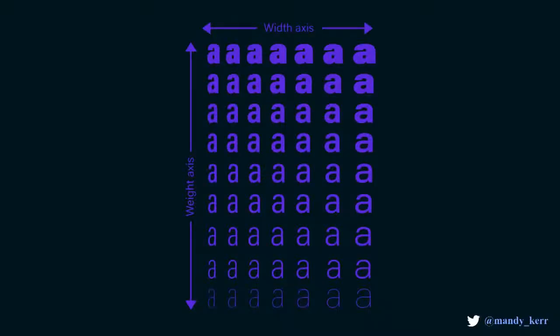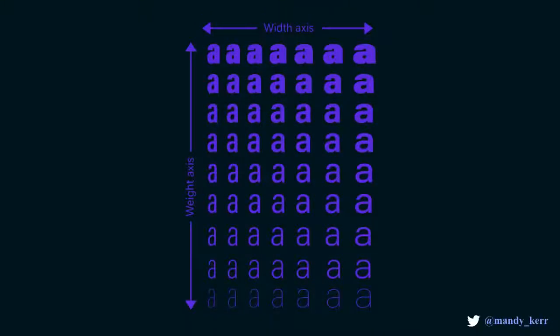And we're not just limited to a single axis. A variable font can contain many different axes doing many different things. And as you can see in the image, the interpolation doesn't just apply to a single axis at a time — it applies to all of the combinations as well. So you can have a wide, bold font or a narrow, thin font. And because of the way that these fonts are made with the interpolation, they typically result in smaller file sizes.